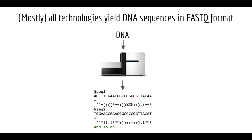These quality characters tell you the probability that, for instance, that T is actually a T or that G is actually a G. You can't read those characters directly, but a parenthesis might mean a 1-in-100 chance the base is wrong, while a plus sign might mean a 1-in-10 chance. Computers use a translation system to convert these characters into probability estimates used by aligners and mutation callers.